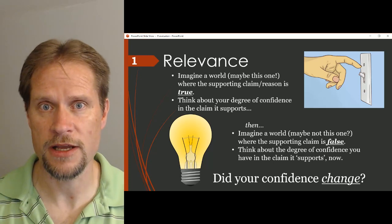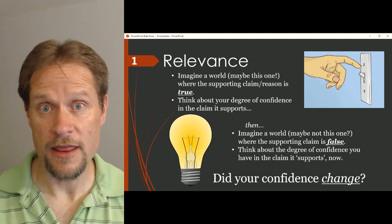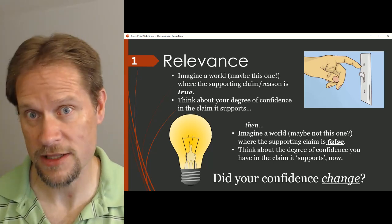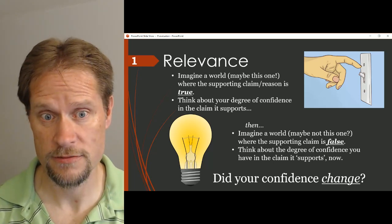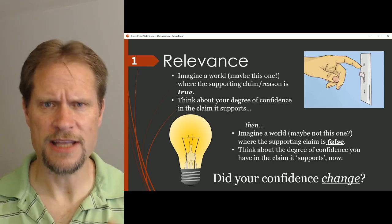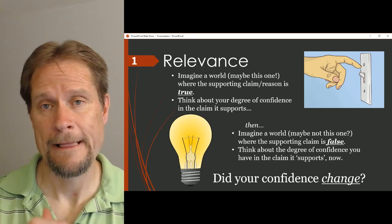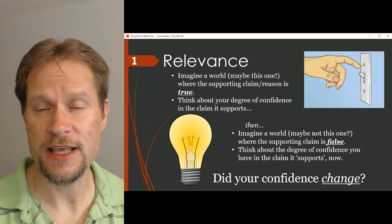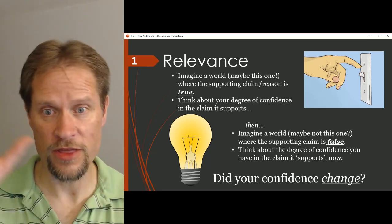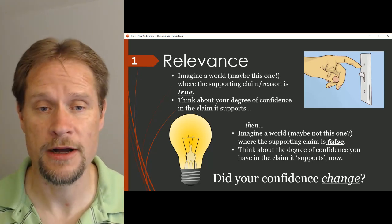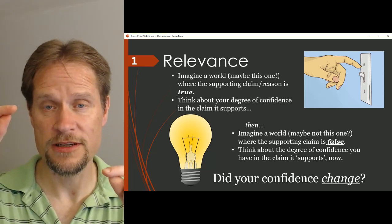You're holding that in your head — that's one world, one degree of confidence in the conclusion. Then we're going to imagine a second world, maybe a hypothetical one, where the allegedly supporting claim is false. And then we're going to imagine: in that universe where that supporting claim is not true, what's my confidence that the conclusion is true? The question we're going to ask, juggling those two hypothetical worlds, is: is the degree of confidence we have in the conclusion different in those two worlds?